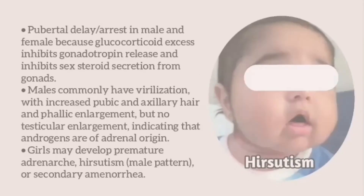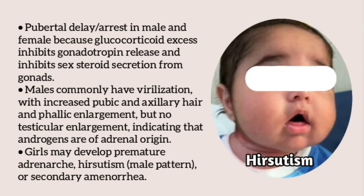Acanthosis nigricans can occur in cases of insulin resistance, with thickened dark skin in the axilla, groins, and around the back of the neck. In Cushing syndrome there is pubertal delay and arrest in both males and females, because glucocorticoid excess inhibits gonadotropin release and directly inhibits sex steroid secretion from the gonads. Males commonly have virilization with increased pubic and axillary hair and phallic enlargement but no testicular enlargement, indicating androgens are of adrenal origin. Girls may develop premature adrenarche, hirsutism of male-pattern distribution, or secondary amenorrhea.